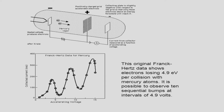The Frank-Hertz experiment provides support for the Bohr model of the atom. In this experiment, electrons were accelerated through a low-pressure gas, and collisions of electrons with gas atoms could provide enough energy for electrons in the gas atoms to move from one energy level to another. The use of argon is preferred because mercury is toxic. In addition, heat is required to vaporize mercury but no heating is required for argon gas. The Frank-Hertz experiment is explained in terms of elastic and inelastic collisions between electrons and mercury atoms.